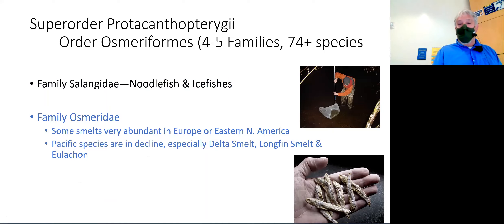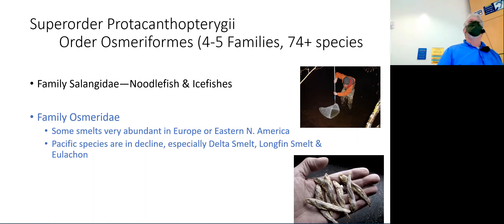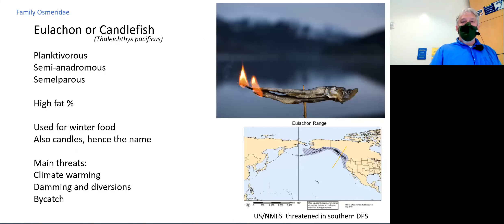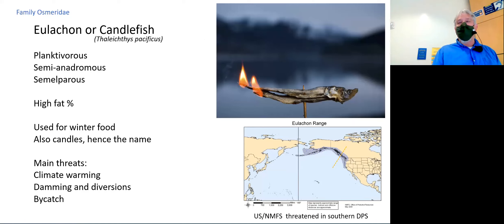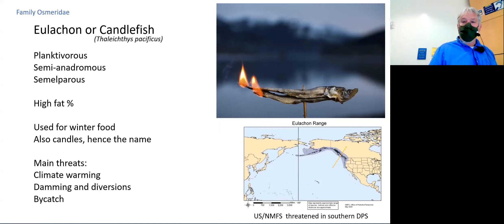Smelts are very abundant in Europe, eastern North America, and the Pacific coast of North America, but our Pacific species seem to be in decline — especially the delta smelt, longfin smelt, and eulachon. The delta smelt is endemic to the Sacramento–San Joaquin Delta region. Though small bait-fish, all look quite similar — small silvery fishes with very minute fins and poor swimming ability — but they have distinct distributions and life history attributes.